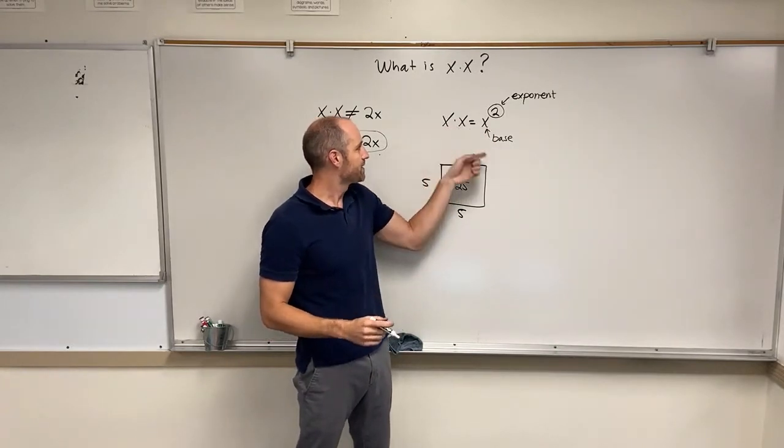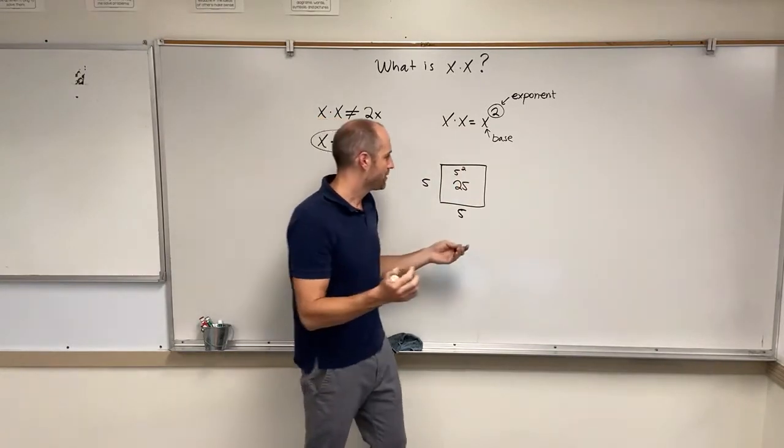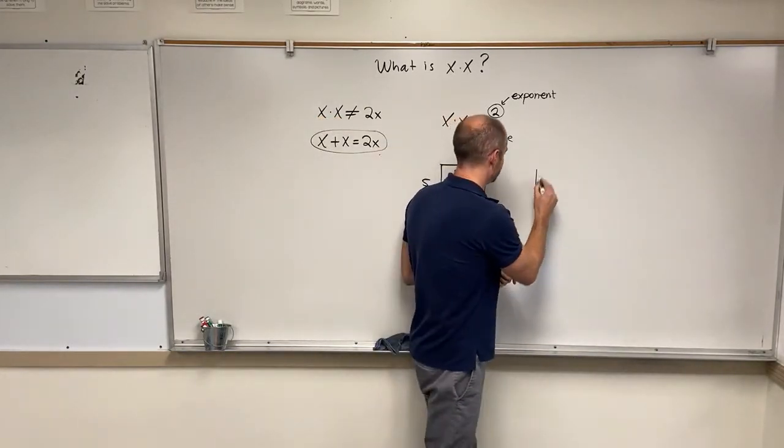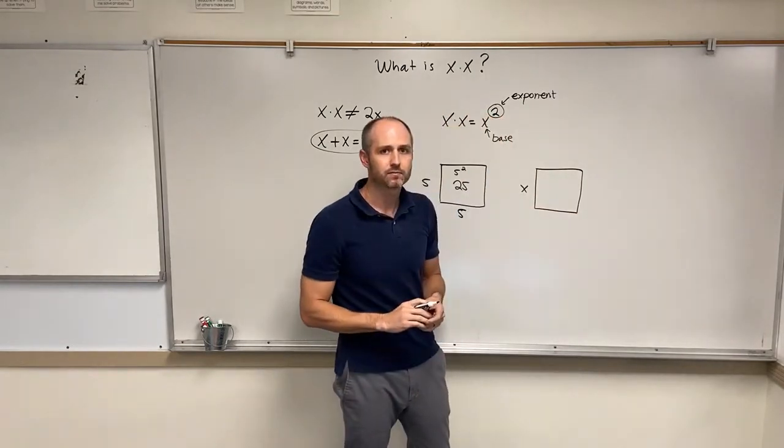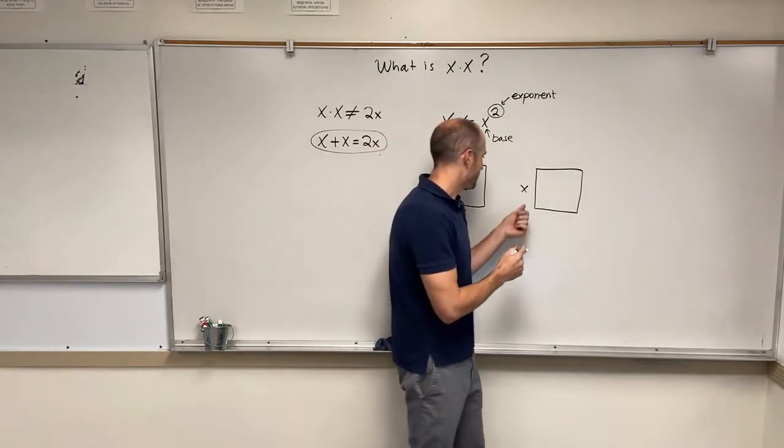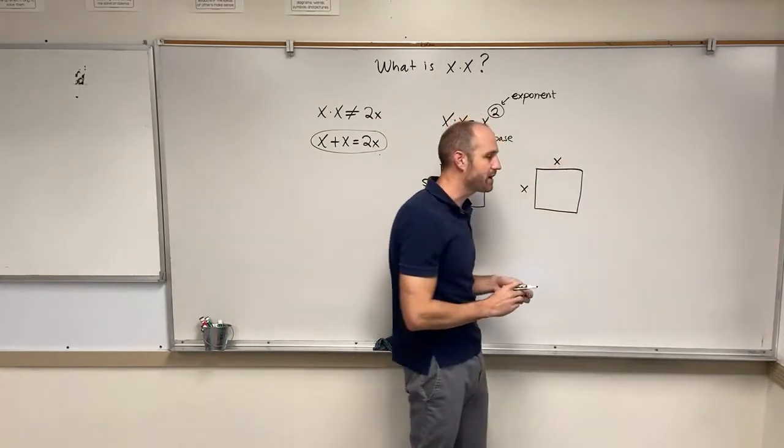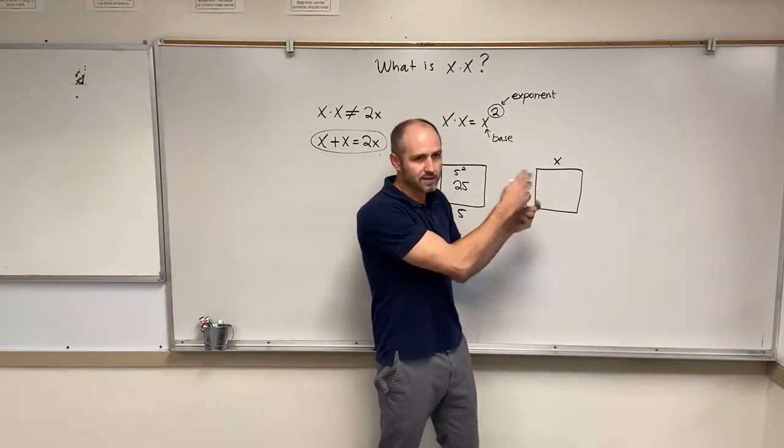This is multiplying a number times itself, but we don't know what the number is. So in other words, we have a square but we don't know what its side length is. What we do know is that all the sides are the same length, so this side is the same as that side. And to find the area of this square, we would multiply this number by itself, or length times width, which happens to be the same.